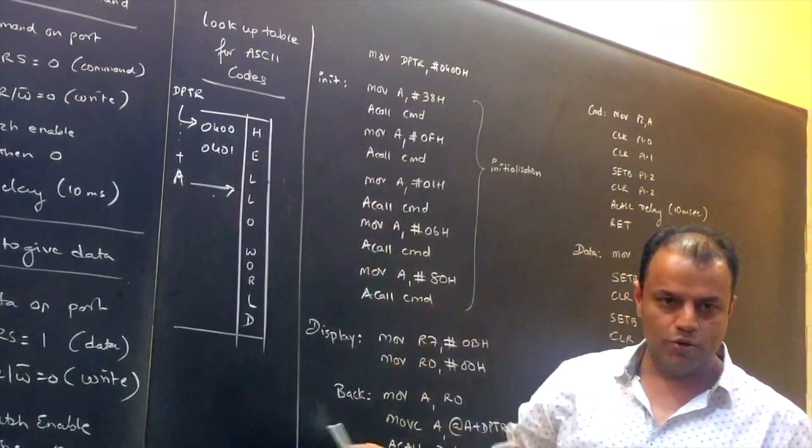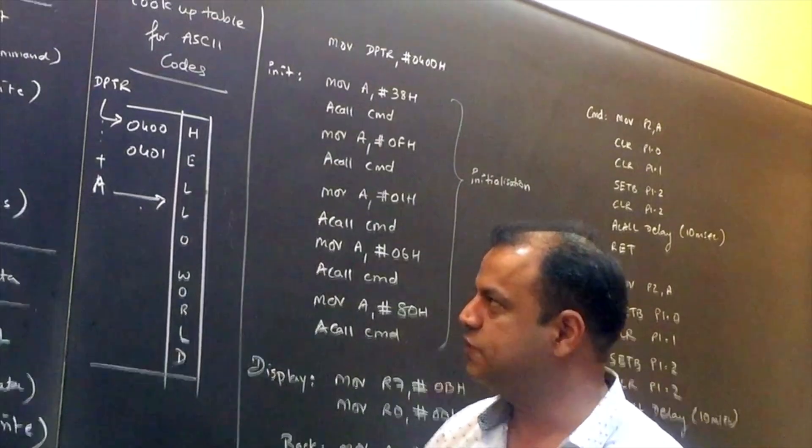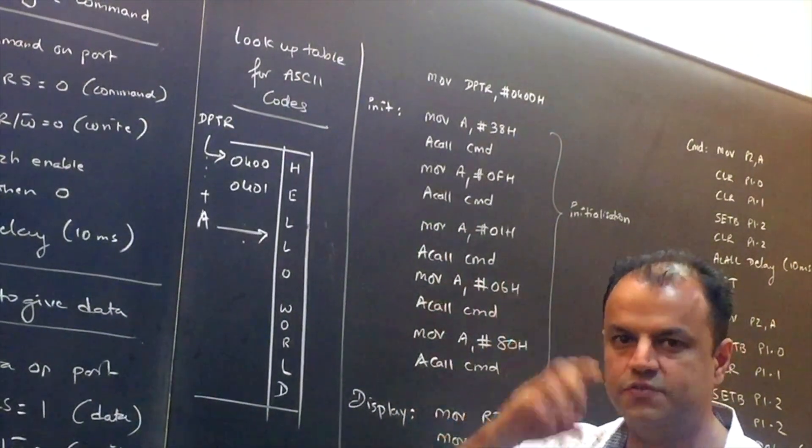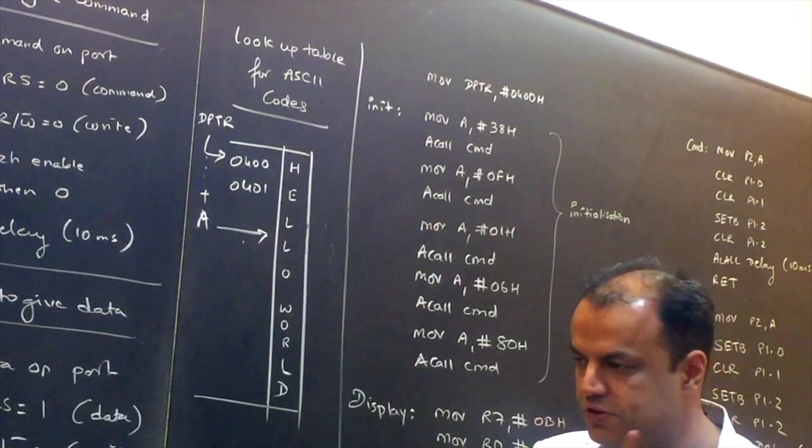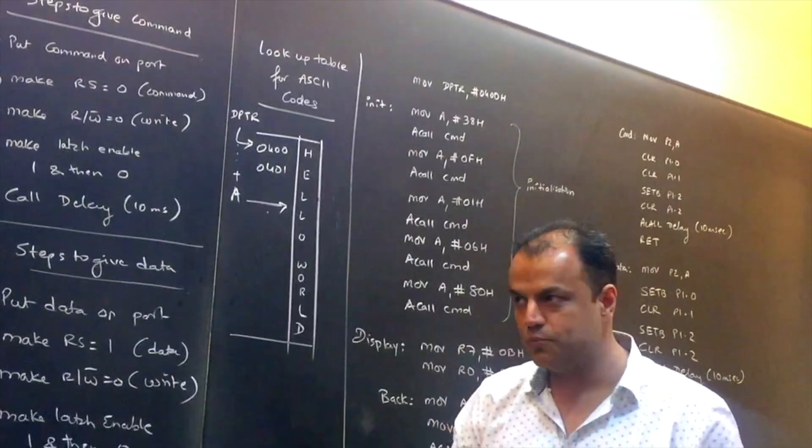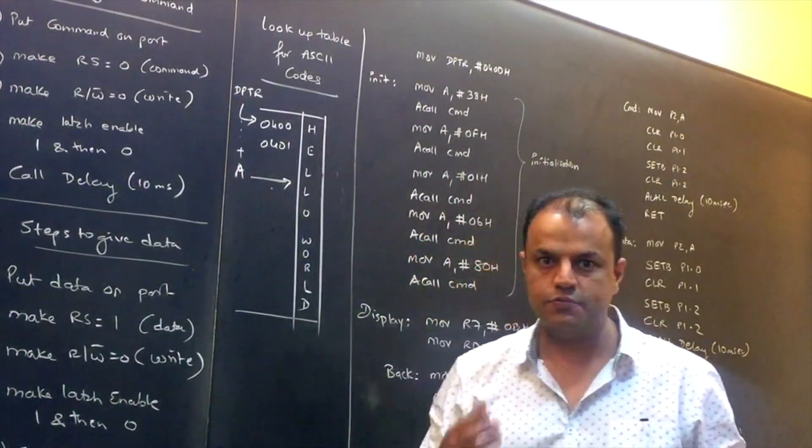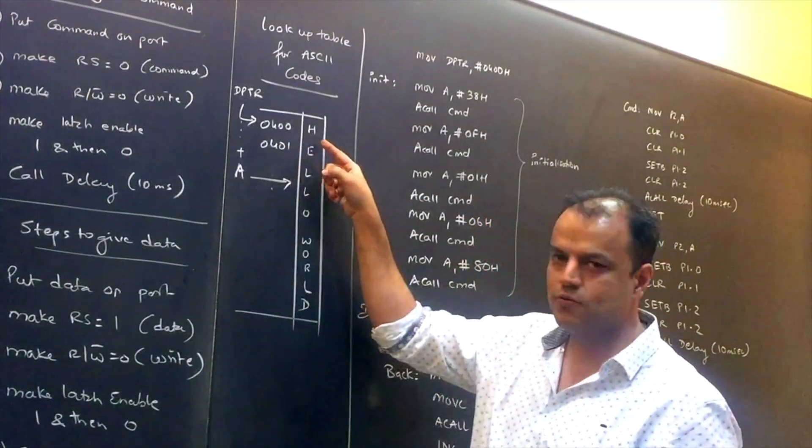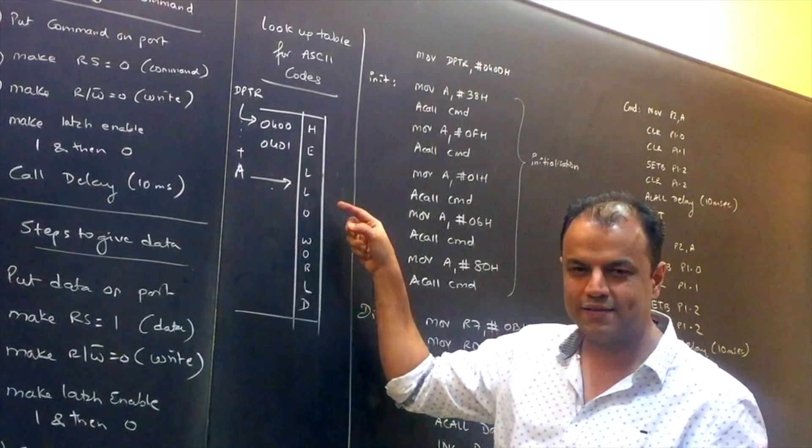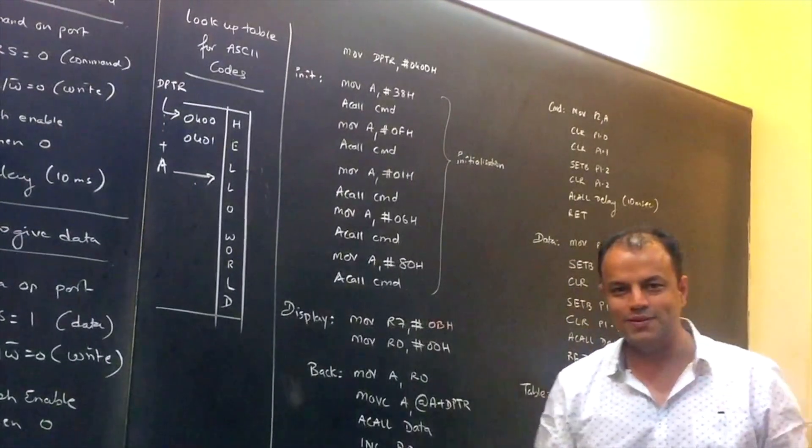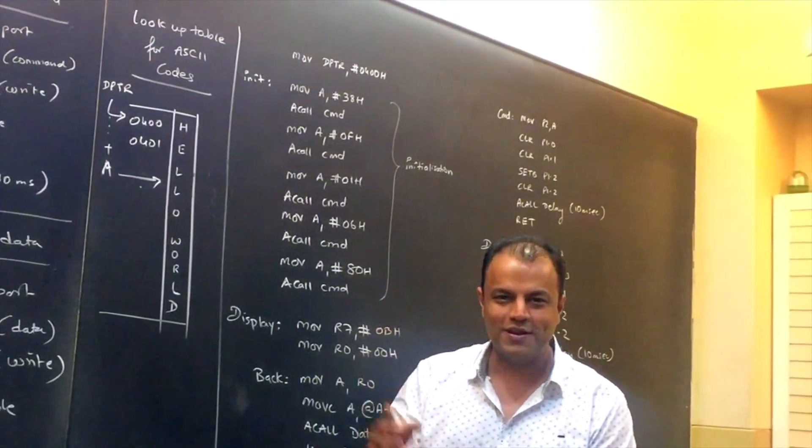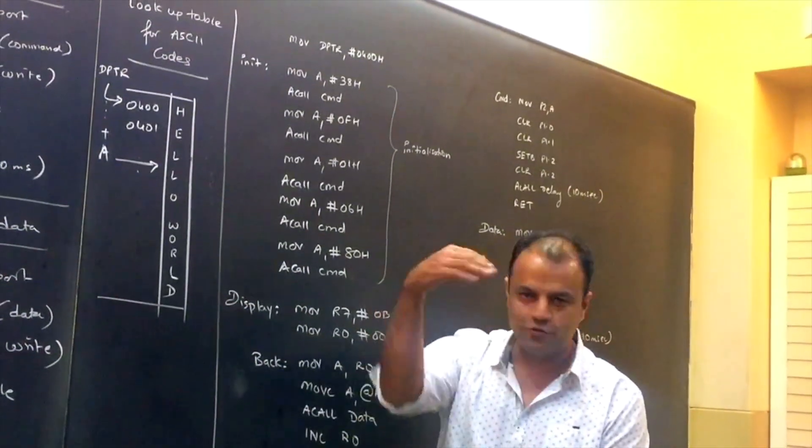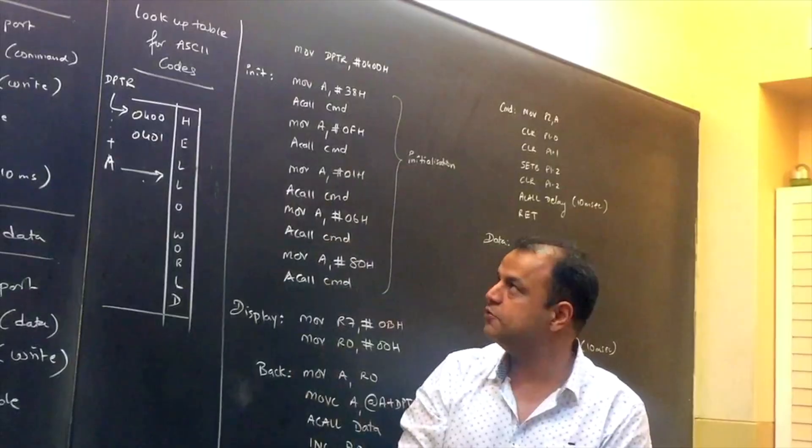Exactly same steps to give data. Put data on the port. The only difference is now make RS 1 to indicate that it is data. Make R/W 0 to indicate that you are writing. Make latch enable 1 and 0 so that it's latched. And keep a small delay of 10 milliseconds. It's exactly the same except for RS being 1 and RS being 0. Now keep a lookup table. Let the lookup table start from some location like 0400. Initialize DPTR at the beginning of the lookup table.